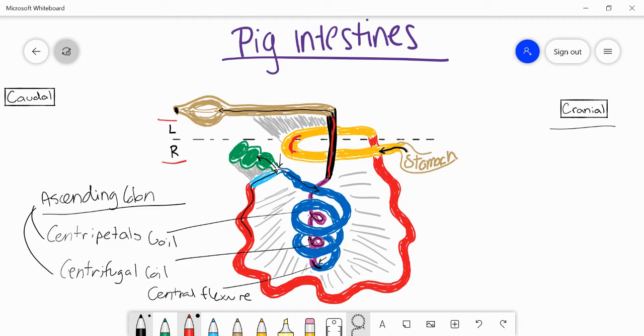Then we get into the rectum. Right here is the rectum. And the food will then go out the anus. And that's essentially the path of the food as it goes from the stomach through the small and large intestines.